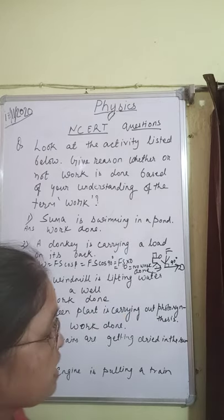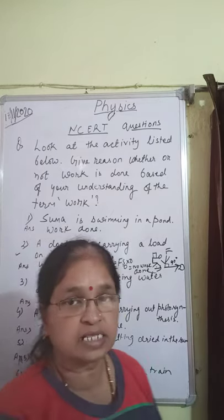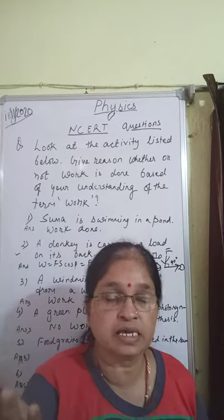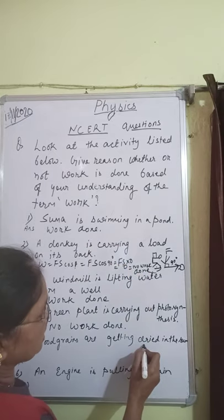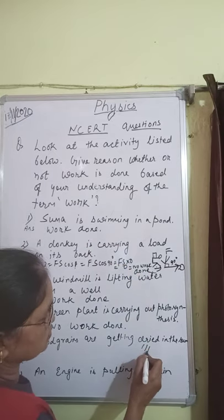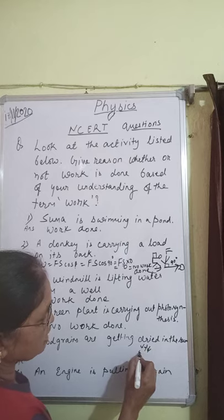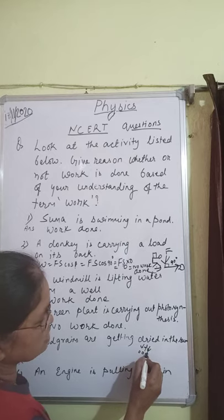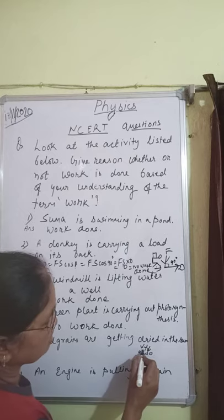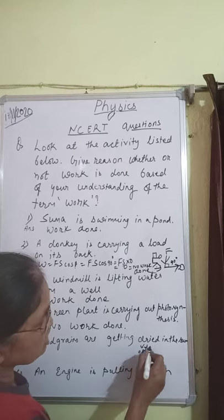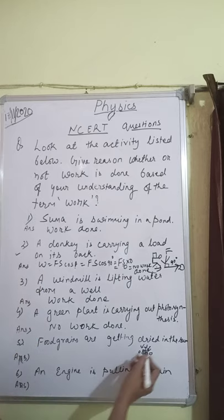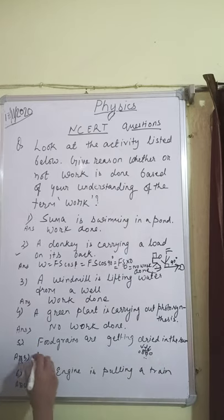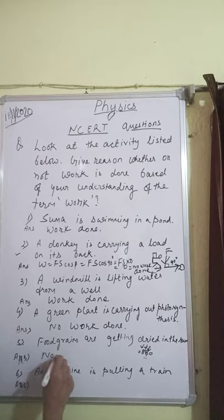Fifth: Food grains are getting dried in the sun. Sun rays are falling on the food grains and they are drying. Here also there is no force, no displacement, so no work done.